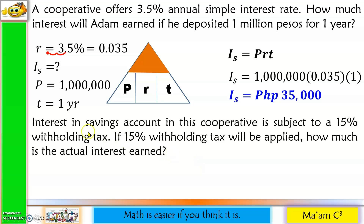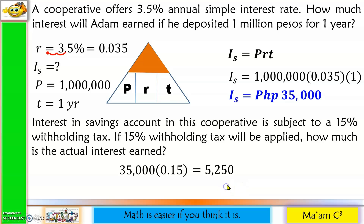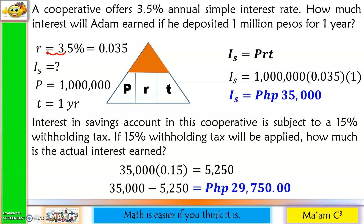Follow-up question: interest in this cooperative's savings account is subject to a 15% withholding tax. If 15% withholding tax is applied, how much is the actual interest earned? We multiply P35,000 by 0.15 to get P5,250. Subtracting the withholding tax: P35,000 minus P5,250 equals P29,750. So the actual interest earned by Adam is P29,750.